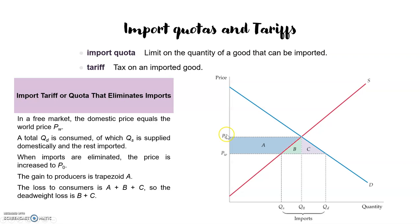we will go back to the initial price of P0 and imports will be eliminated. The gain to the producer will be exactly area A, because they go back to the initial surplus. And the consumers — in the initial point when the market was closed, their surplus was exactly the triangle above P0 and below the demand. They will go back to that situation when the tariff or quota completely eliminates imports. If the market is open to the world, the consumers will earn areas A, B, and C.